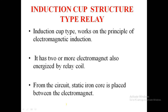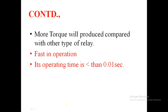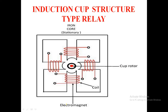Next, coming to the induction cup type relay. This mainly works on the principle of electromagnetic induction. It has two or more electromagnets energized by the relay coil. The coil is wound on the electromagnet which generates a rotating magnetic field. Because of this rotating magnetic field, current is induced inside the cup, and the cup starts rotating. This produces more torque in the cup type induction relay compared to the other relay types.